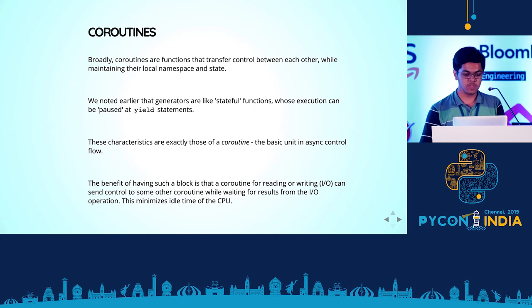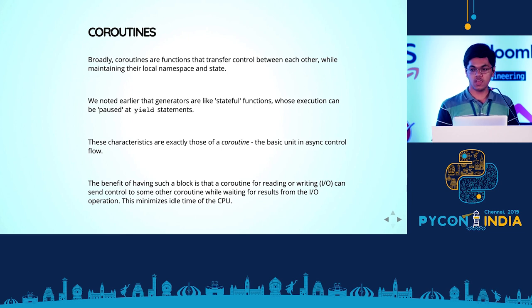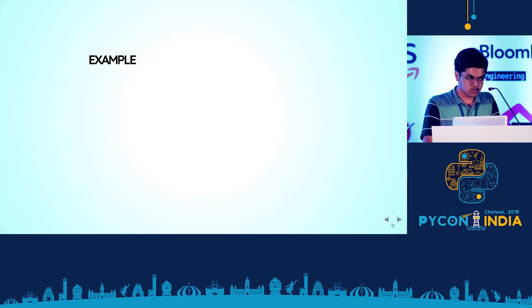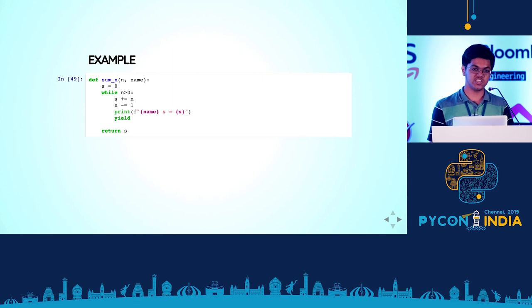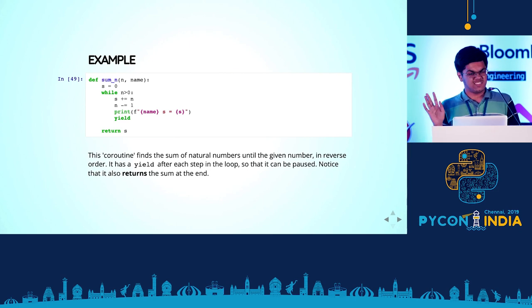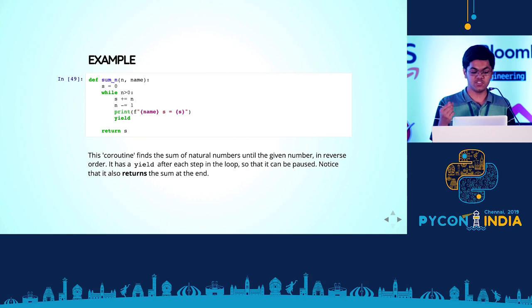Why would you want concurrency? Say your function has a blocking operation like IO or an HTTP call and all you're doing is waiting. Instead, you could go to another coroutine and execute some stuff, then come back once the blocking operation is done — thereby minimizing how long your CPU was idle. Here's an example coroutine: it sums natural numbers up to n in reverse order with a yield at each iteration just to pause it. What's different from generators we saw before is that it has a return statement. In generators, return works by still raising StopIteration, but the value of that exception is whatever is returned.